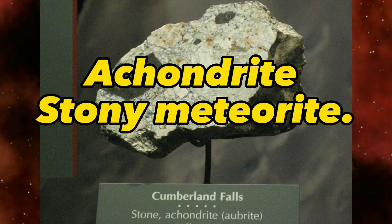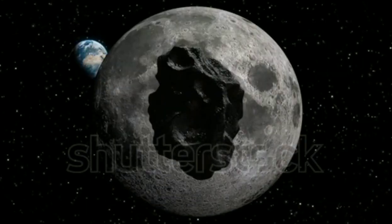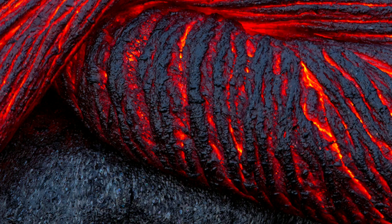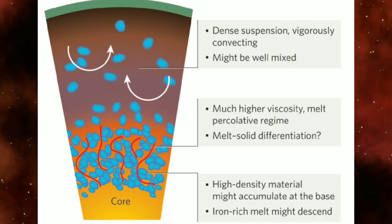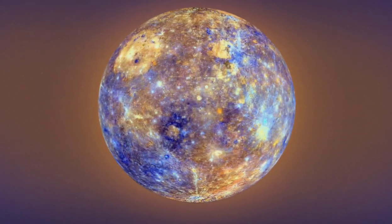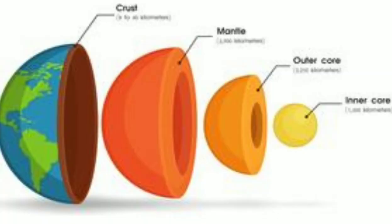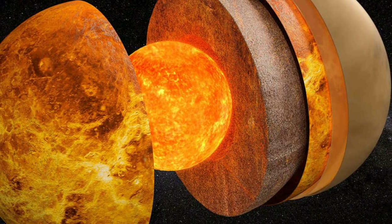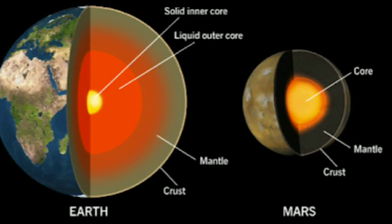Achondrites include meteorites from asteroids, Mars and the Moon. They are igneous, meaning at some point they were melted into magma. When magma cools and crystallizes, it creates a concentric layered structure — a process known as igneous differentiation. The rocky planets Mercury, Venus, Earth and Mars were formed in this way, giving them planetary crusts, mantles and cores. Achondrites can tell us a lot about the internal structure and formation of the planets, including our own. Here are some samples of achondrite-type stony meteorites.